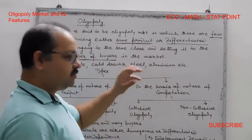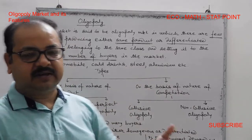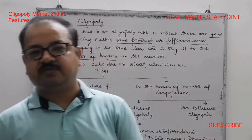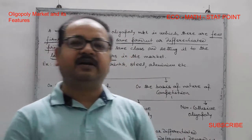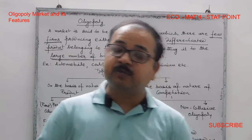So to summarize: few firms, large number of buyers, same product or differentiated product — these are the characteristics that can be seen in the oligopoly market.